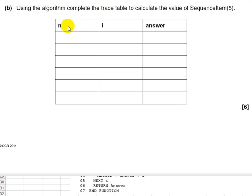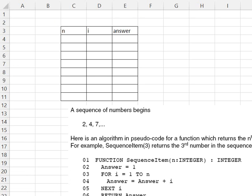And the trace table has got the variables on the top row of the headings: N, I, and answer. Now, I am going to show that in a spreadsheet and I am going to use the spreadsheet to record the line numbers we trace through.